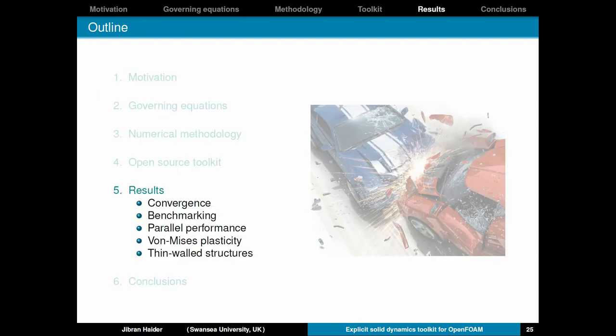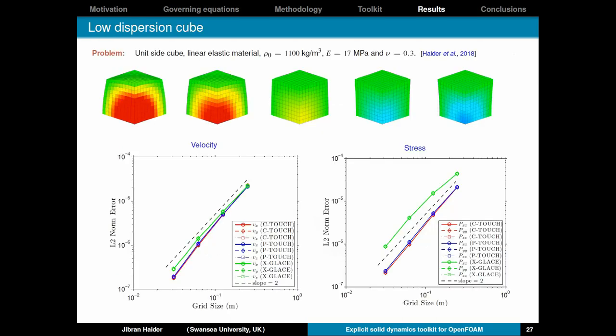Now let's move on to the numerical results. First, we'll check the convergence of the scheme. So this is a simple problem of deformation of a cube. So it's initially deformed and you let it go. And this is how it deforms with the pressure distribution. Now you can see here the convergence of velocities and stresses with the L2 norm errors. And the dashed line shows the second order convergence. So all three schemes show second order convergence for both velocities and stresses, which is important.